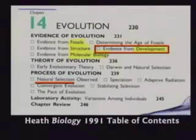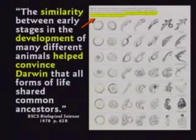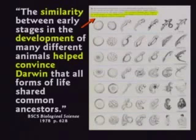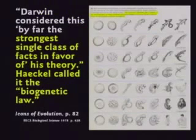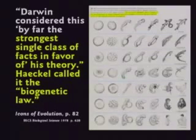Then they say we've got evidence from development. This one makes me angry. This book says the similarity between early stages in development helped convince Darwin that all forms of life shared common ancestors. Darwin considered this by far the strongest piece of facts in favor of his theory. Haeckel called it the biogenetic law.